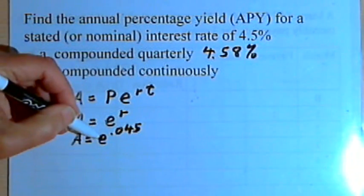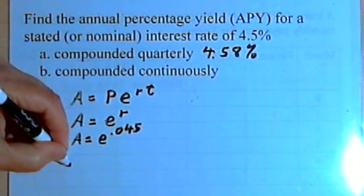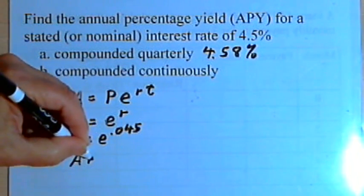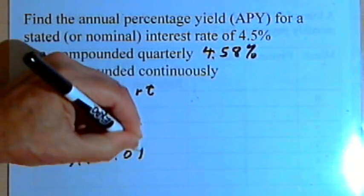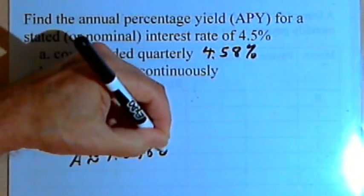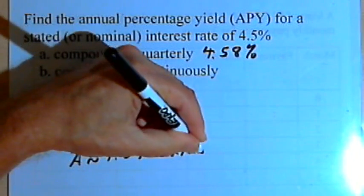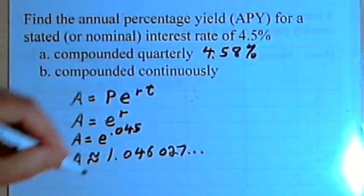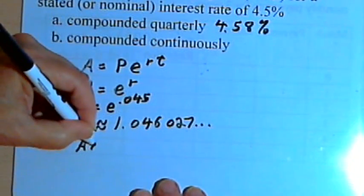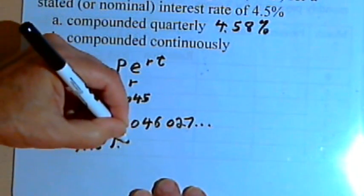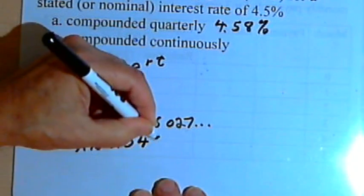We use a calculator to figure out what that is, and what we get is that A equals approximately 1.046027, and once again this number keeps going. So we'll take this and round it, making it A equals approximately 1.046.